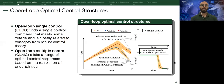In terms of implementation, we notice two open-loop optimal control structures. The first one is the open-loop single control that finds a single control command that meets some criteria, and is closely related to concepts from robust control theory. That is because the resulting optimal control trajectory should perform well under a range of different scenarios. Open-loop single control is mostly suited for reference tracking applications, but it has some limitations. For example, when we are dealing with boundary valued UCCD problems, because open-loop single control cannot satisfy terminal conditions in such problems.